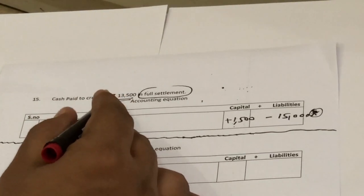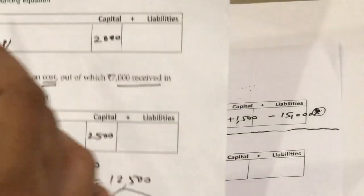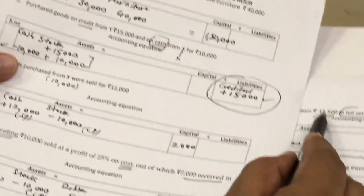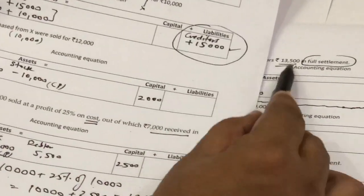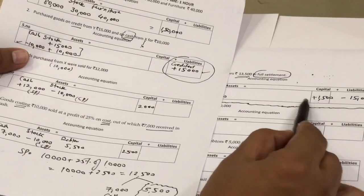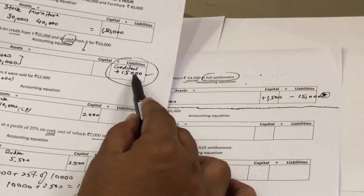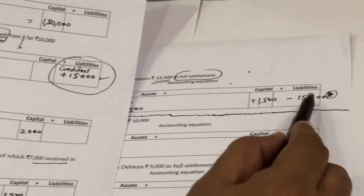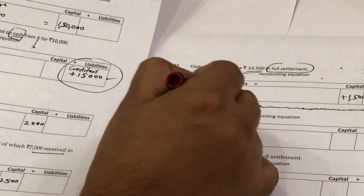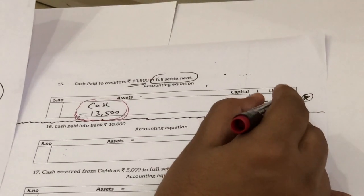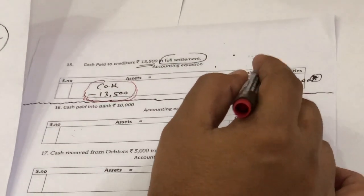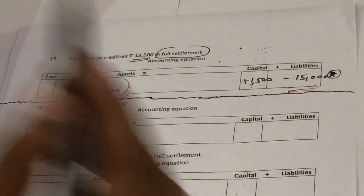Next transaction: cash paid to creditors 13,500 in full settlement. From transaction 2, the creditors were 15,000, so we are paying 1,500 less. This 1,500 is added to capital as it is profit for the owner. Since it is full settlement, the full 15,000 is subtracted from the liability side under creditors, and only the actual cash paid of 13,500 is subtracted from cash. If this were cash received from debtors in full settlement, the balancing figure would be a loss subtracted from capital.